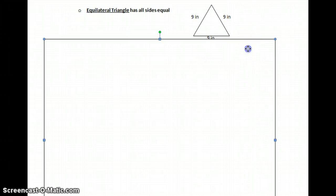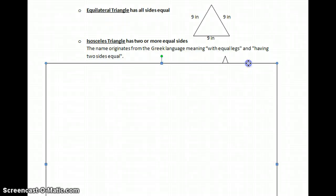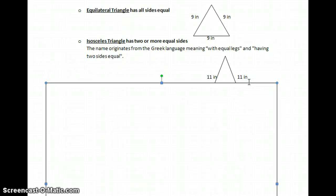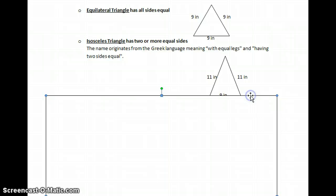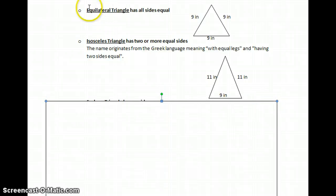Our second one is called an isosceles triangle. Let me scroll this box down some so you can get it. It has two or more equal sides. It originates from the Greek language, meaning with equal legs or having two sides. You don't have to know that, but it's good to know.